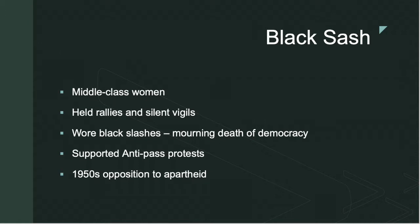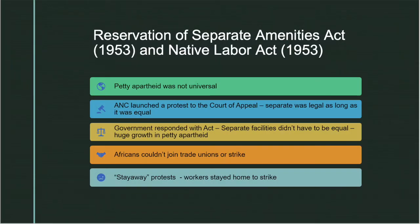The Black Sash was made up of middle-class women that held rallies and silent vigils. They wore black sashes to mourn the death of democracy and supported anti-pass protests, opposing apartheid through the 1950s. The Reservation of Separate Amenities Act and the Native Labor Act: petty apartheid was not universal. The ANC launched a protest to the Court of Appeals, and separate was legal as long as it was equal. The government responded with an act stating separate facilities didn't have to be equal, leading to a huge growth in petty apartheid. Africans couldn't join trade unions or strike, and stay-away protests were common.